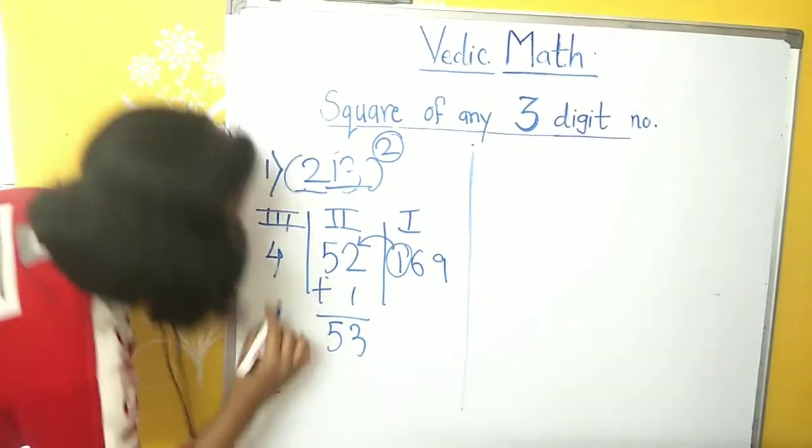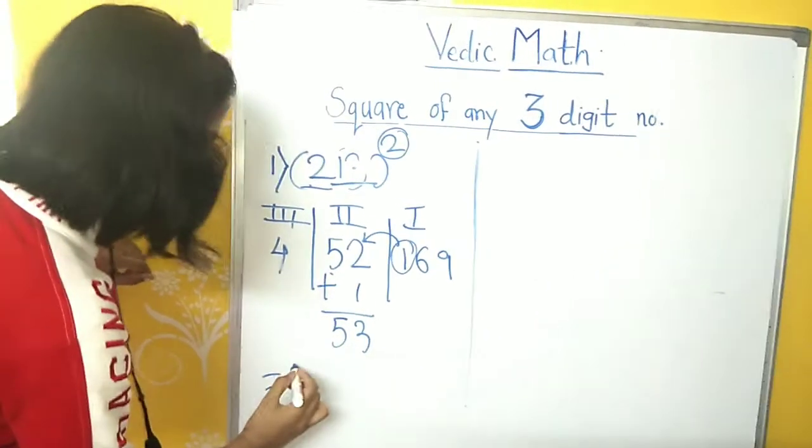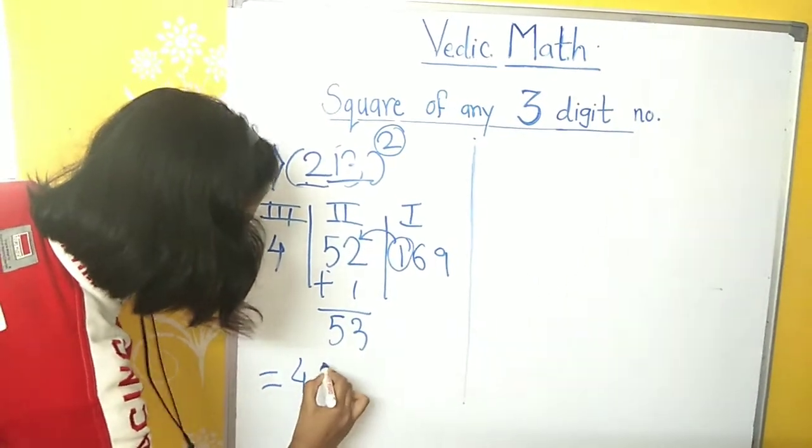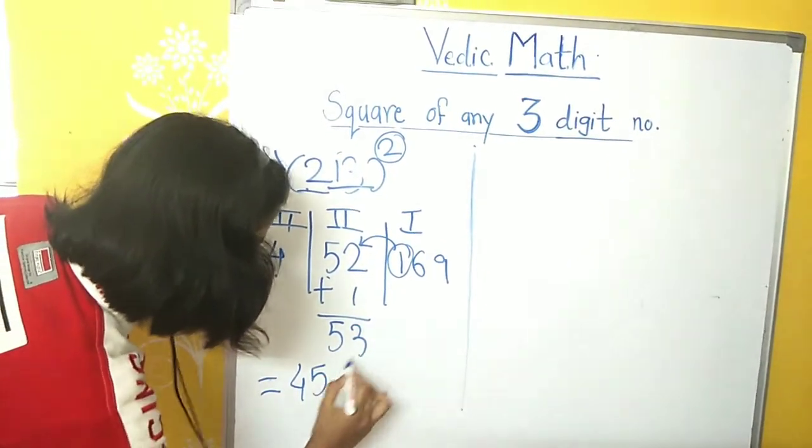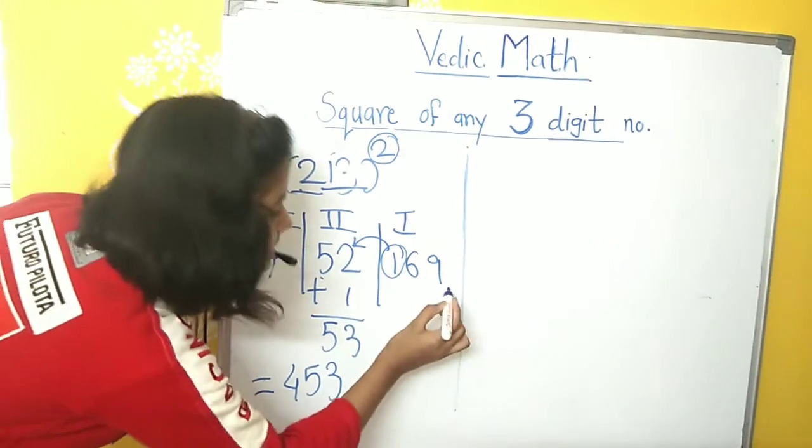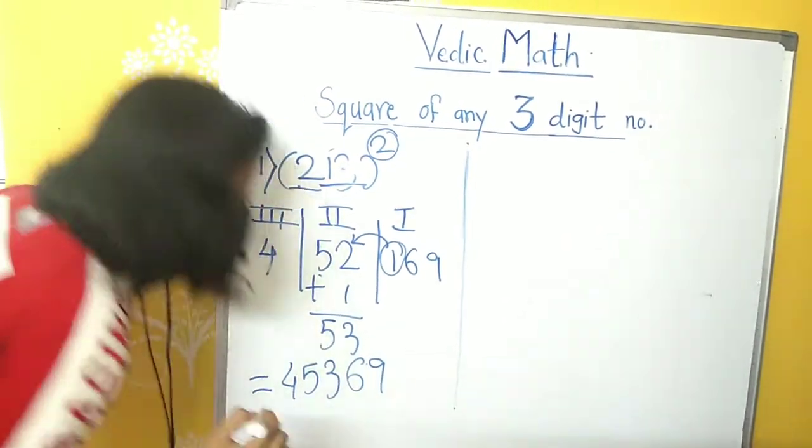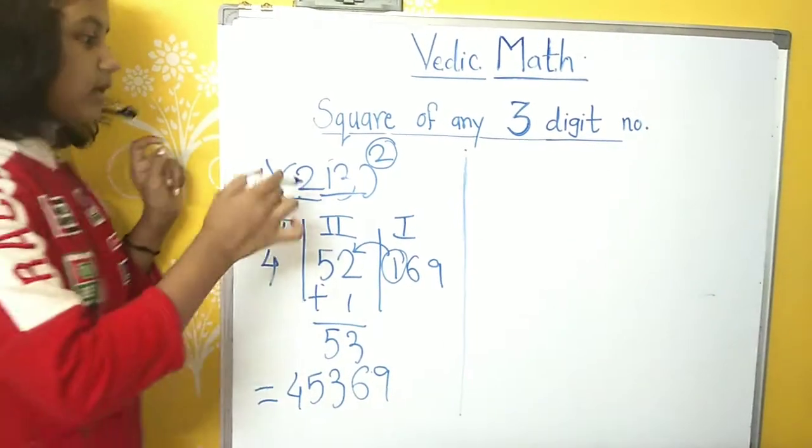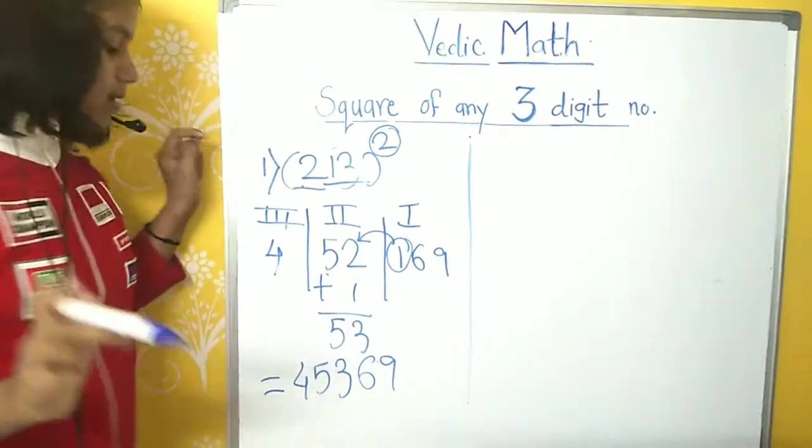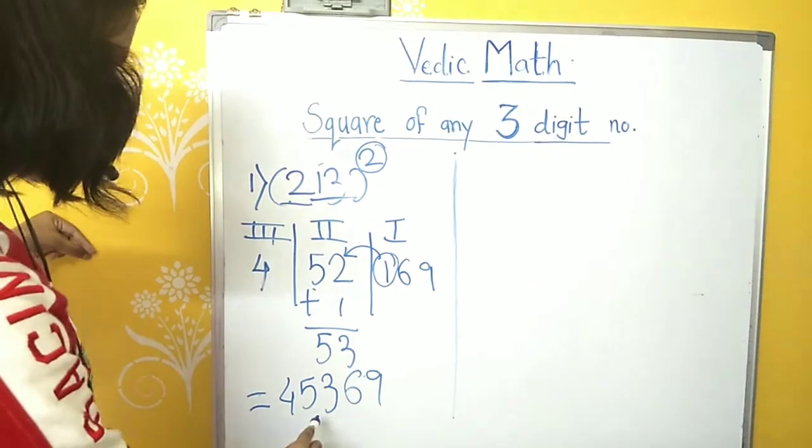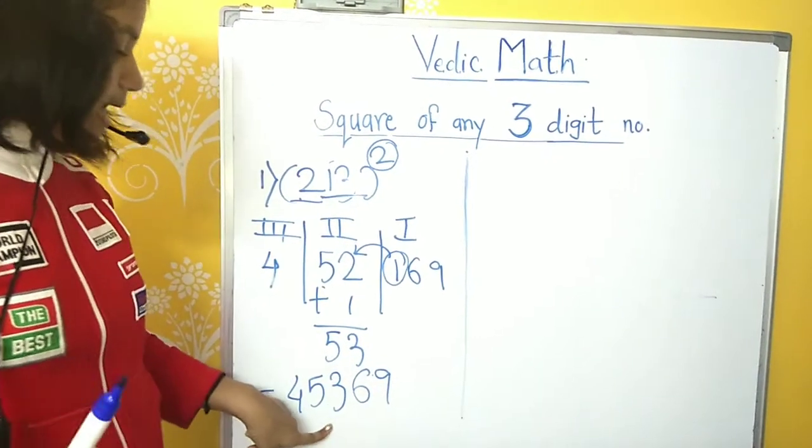Now, we will write the final answer. We will start from the third step. Final answer is 4, 53 over here, we will write it down, and 69 remaining over here. So, the answer of 213 square is 45,369.